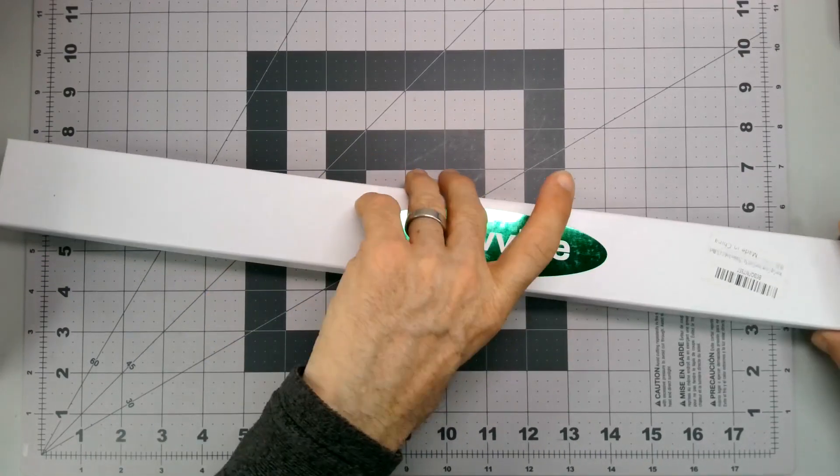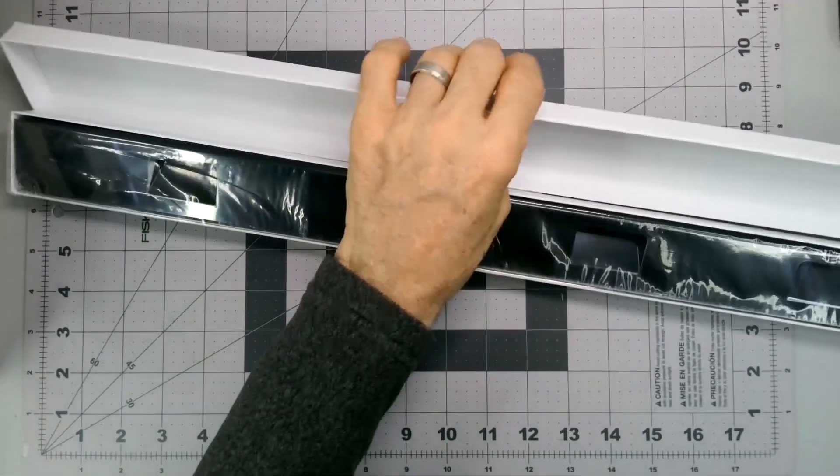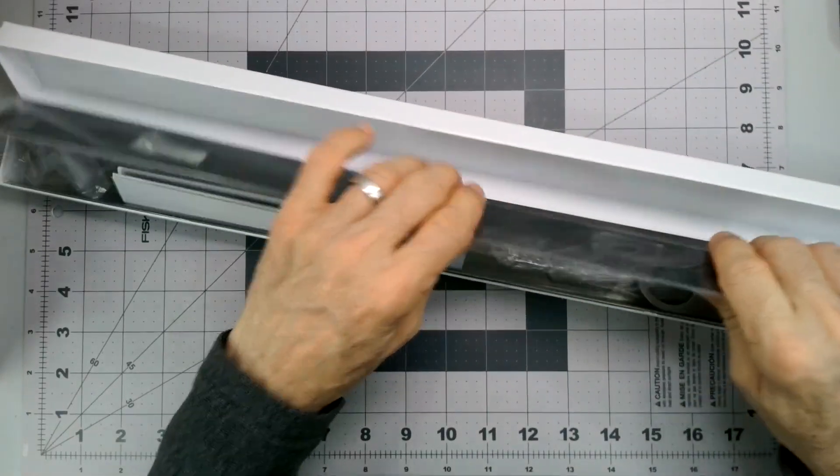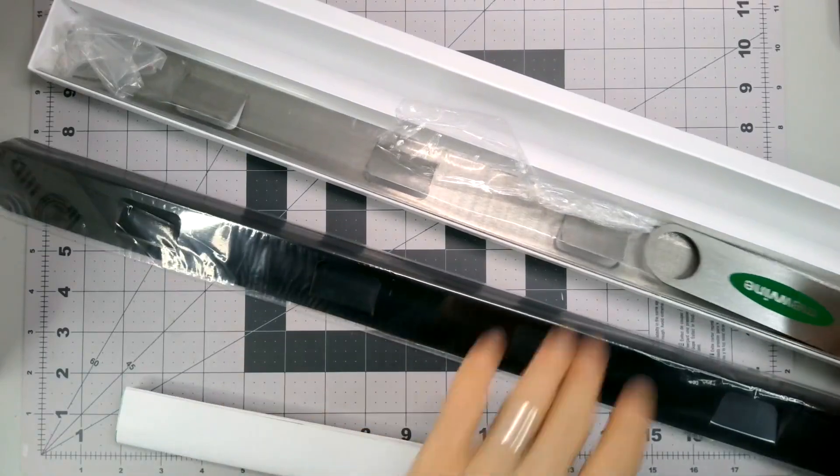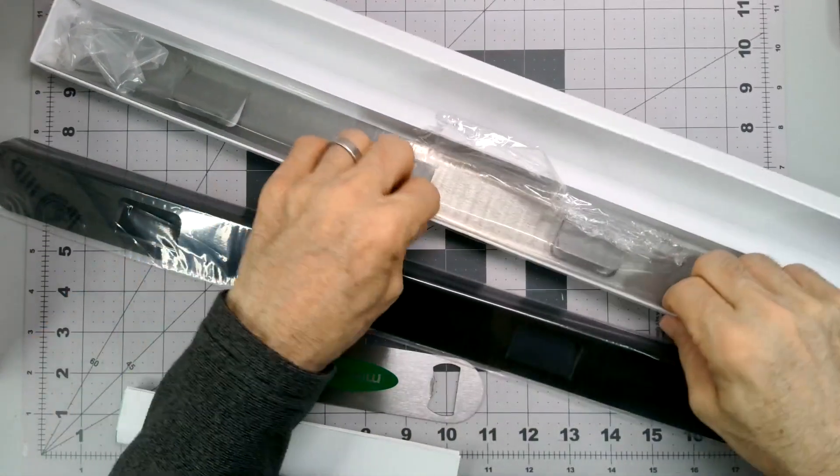Stove cap cover kind of thing for taking up that gap between the stove and the counters where stuff just drips down in there.